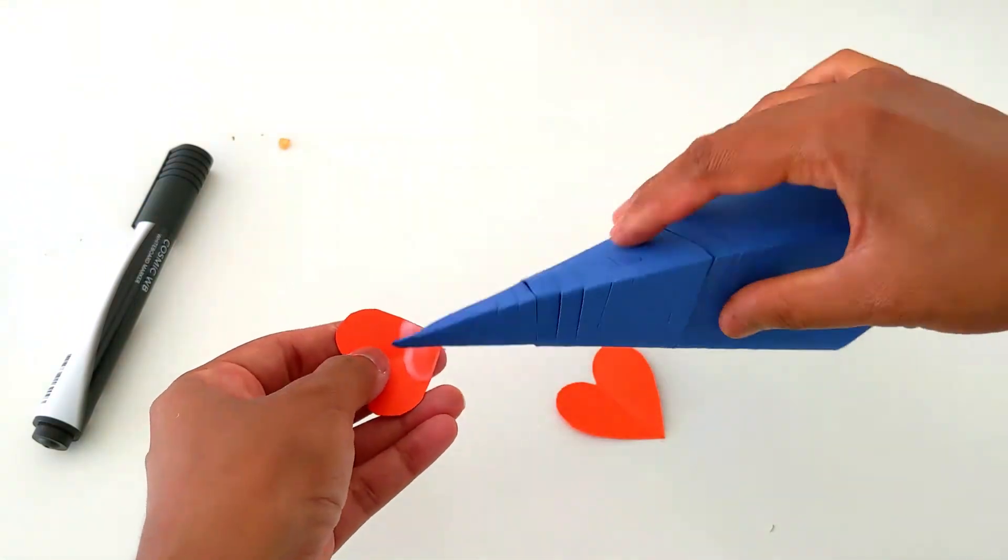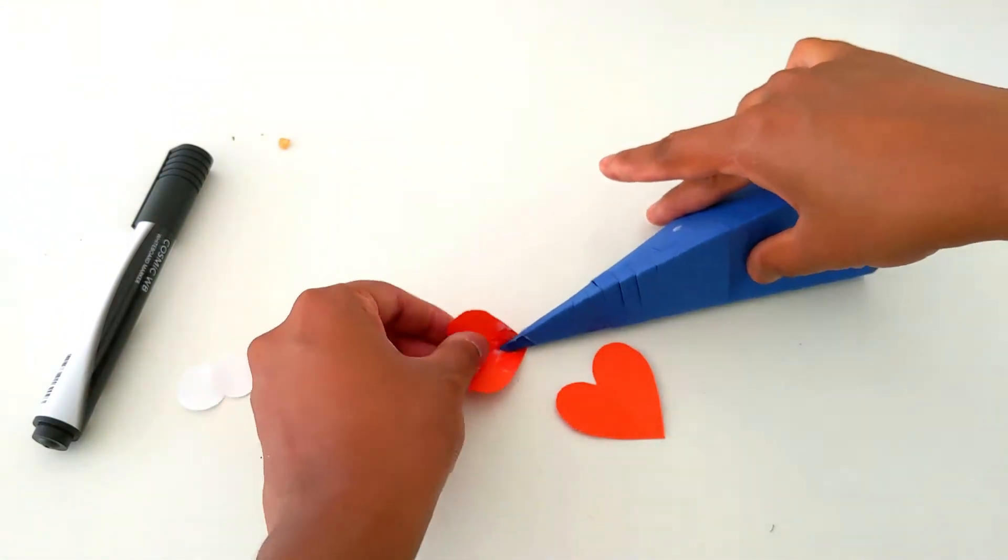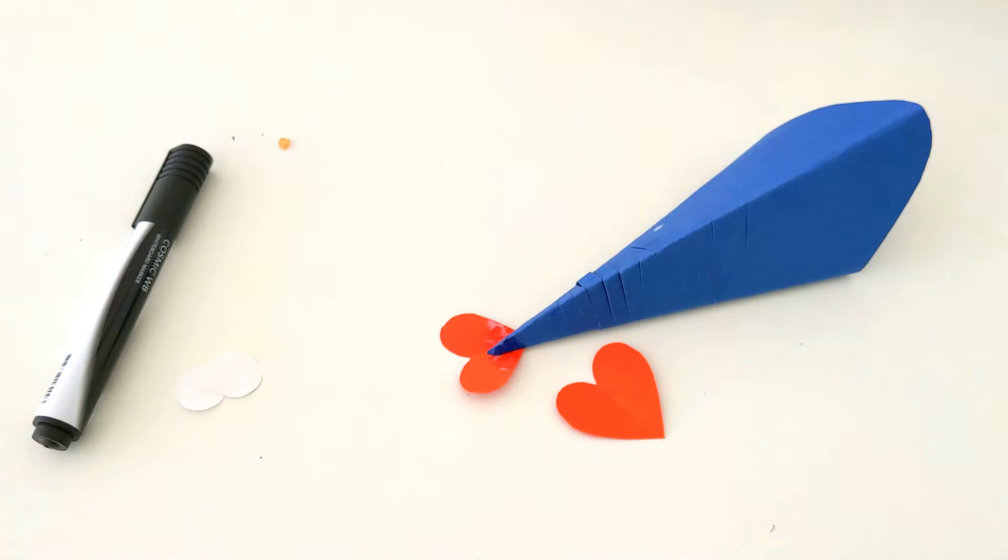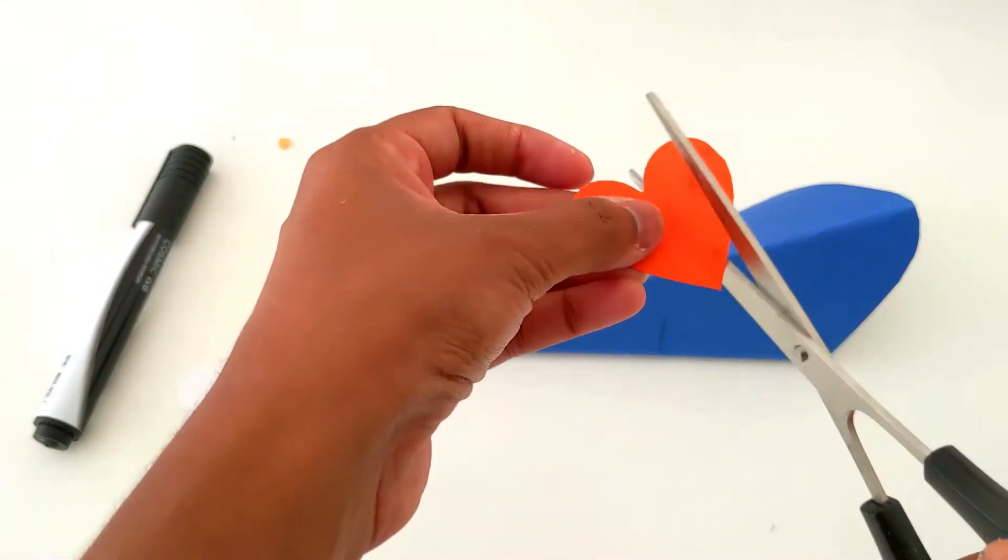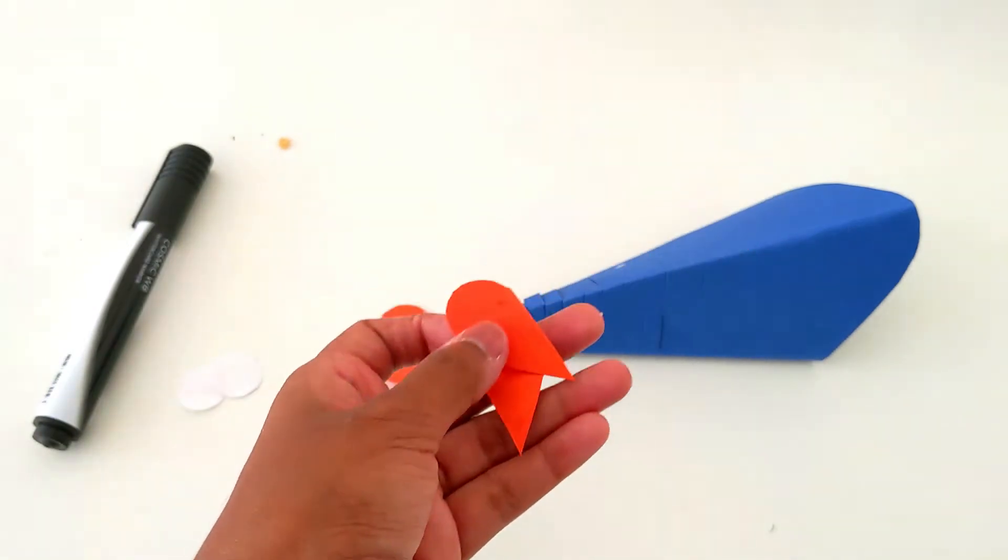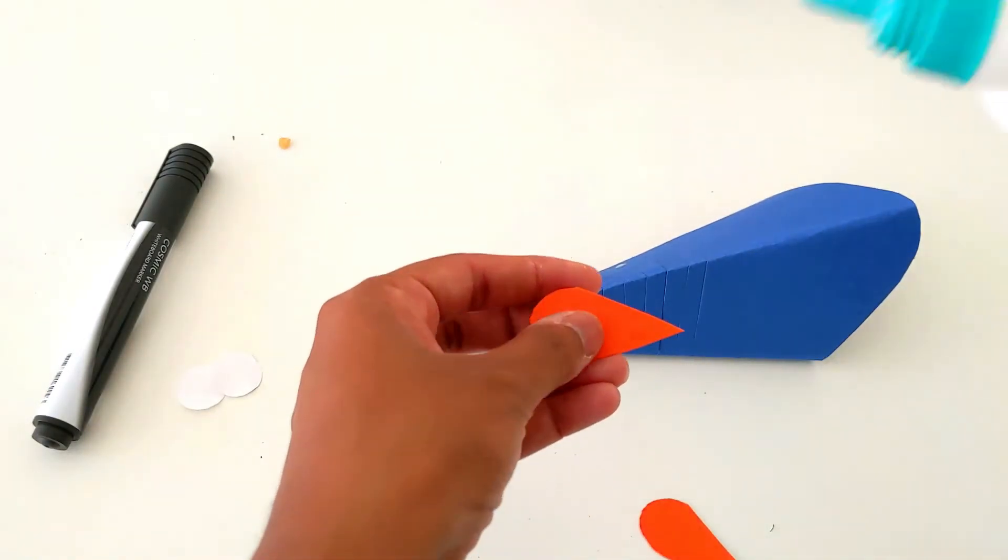Let's put the tail. This heart I'm going to cut into two equal pieces and they will become the fins of the fish. Let's attach them.